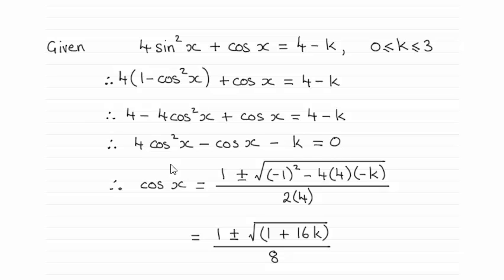And from this, all we do is pick up on the quadratic formula. Remember, a would be 4, b would be minus 1, and c would be minus k.